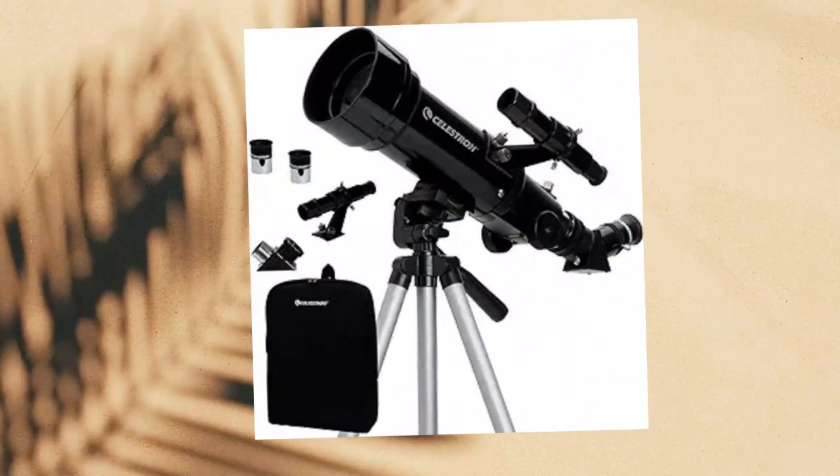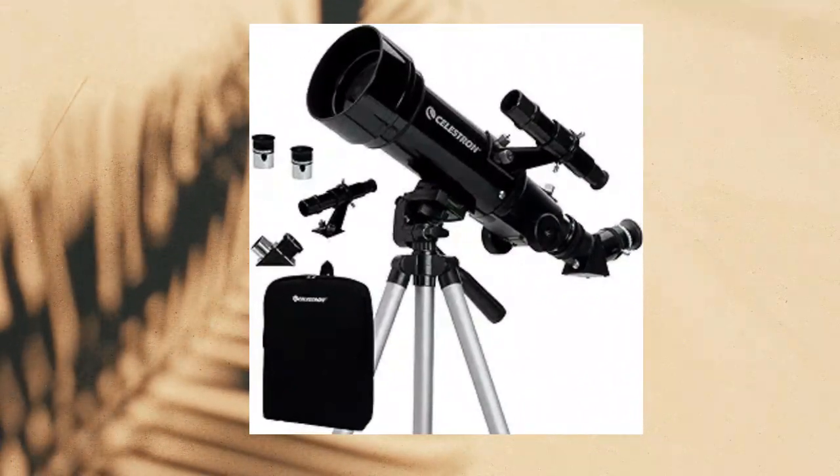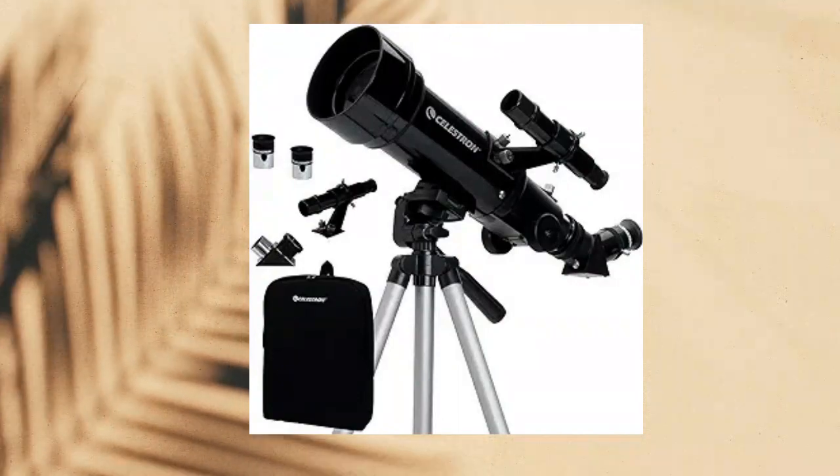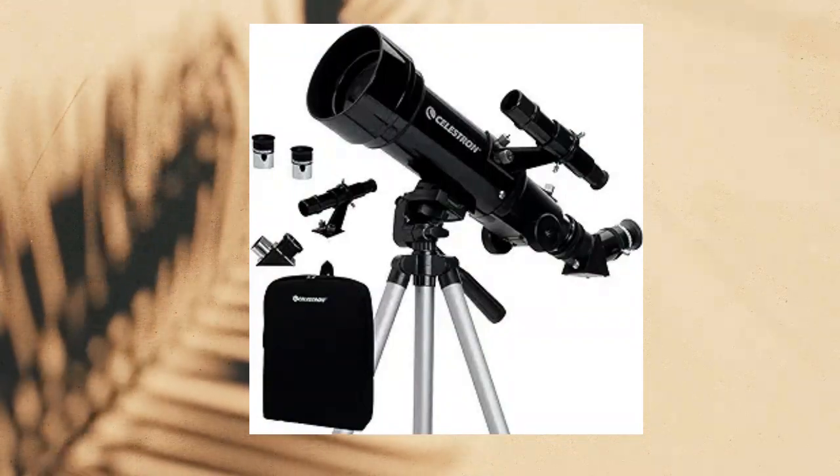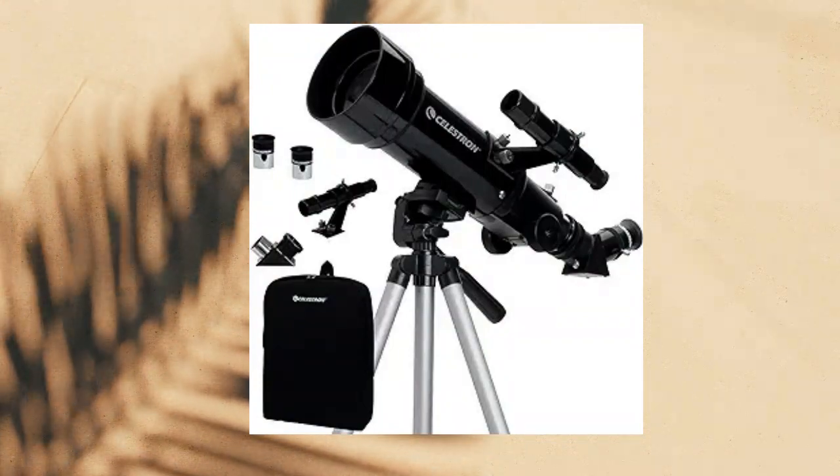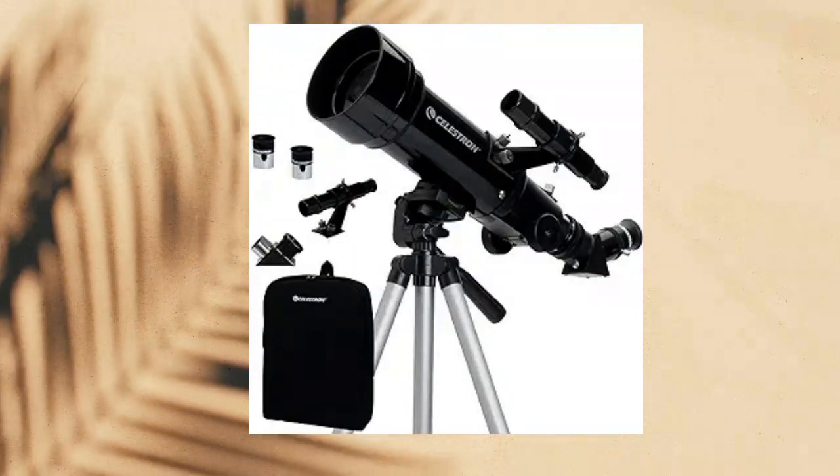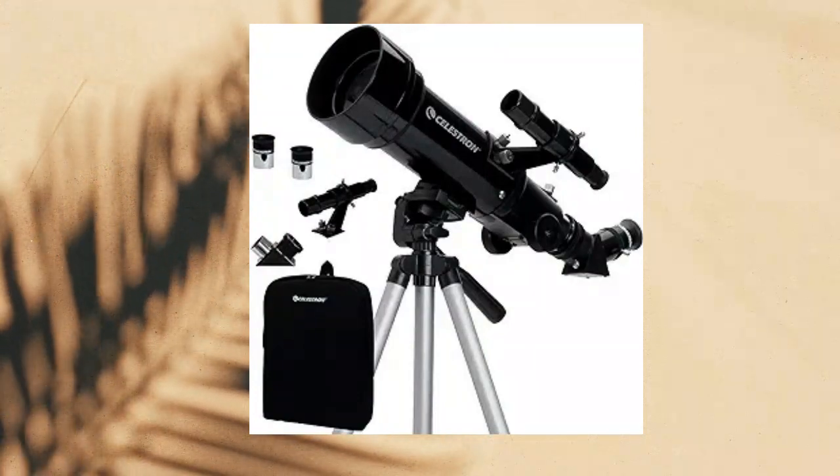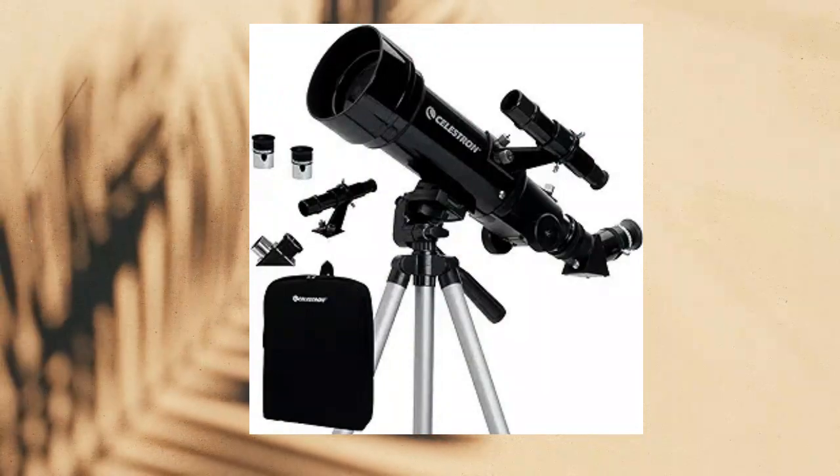Celestron 70mm Travel Scope. Unlock the celestial wonders with the Celestron 70mm Travel Scope. Its panhandle altitude control ensures smooth, precise pointing, while the high-quality fully coated glass optics, 70mm objective lens, and lightweight frame, together with a custom backpack, define unparalleled quality. The telescope is equipped with two premium eyepieces, 20mm and 10mm, that deliver low- and high-power celestial and terrestrial views.